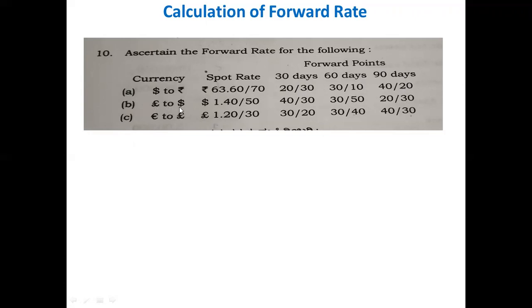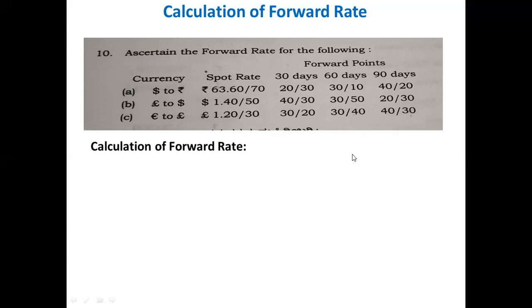For pound to dollar, the spot rate is 1.40 bar 1.50. The 30-day forward points are 40 bar 30, then 30 bar 50, and 20 bar 30. For euro to fund, the spot rate is 1.20 bar 1.30. The 30-day forward points are 30 to 20, 30 to 40, and 40 to 30.